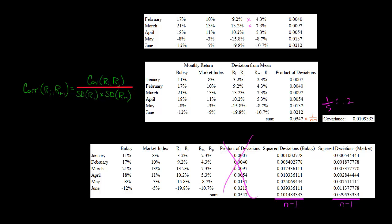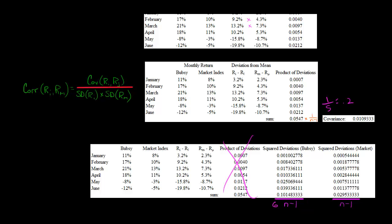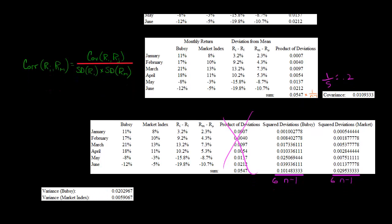Let's take the squared deviations. For Bubsy — firm I — we take 3.2%, the deviation from the mean, and square it. For the market, 2.3% squared gives us that value. For Bubsy, 9.2% squared gives us this, and so forth. We get all these squared deviations, then take the sum of squared deviations and divide by n minus 1, where n is 6, so we divide by 5. We do the same for the market: sum the squared deviations and divide by 5. That gives us the variance for each.